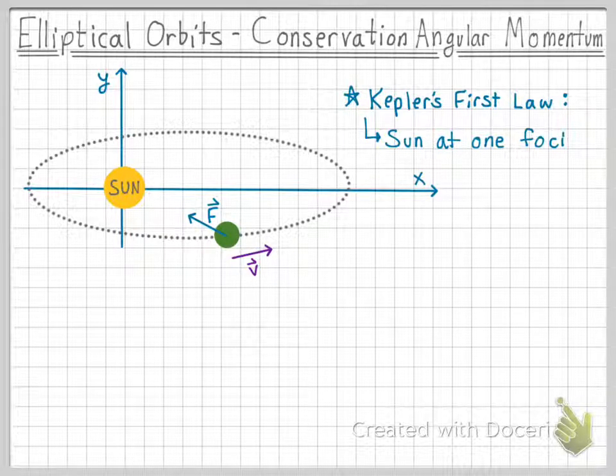Kepler's first law tells us that the sun is located at a particular focus or foci of this elliptical orbit. If you need to learn a little bit more about Kepler's laws, review the link in the description or the one that I put on the Haiku page.